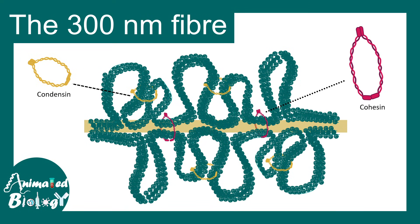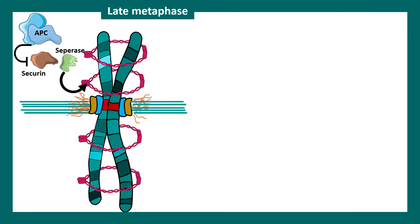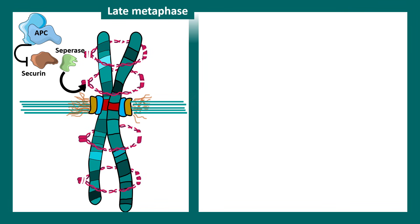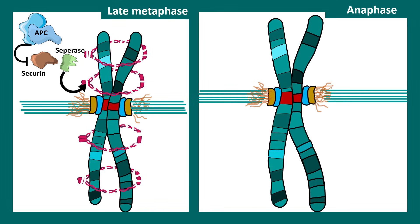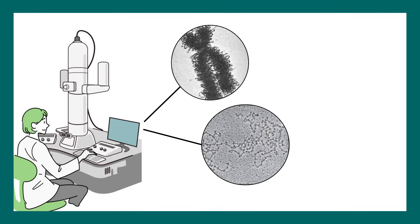The 300 nanometer fiber is supported by several cohesin and condensin rings. The metaphase chromosome has several of these proteins. But when chromatins need to be separated in anaphase, specific molecular mechanisms break down these cohesin rings, allowing chromatins to be pulled toward two opposite poles by microtubules and separated during anaphase.